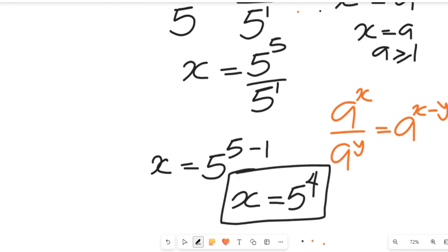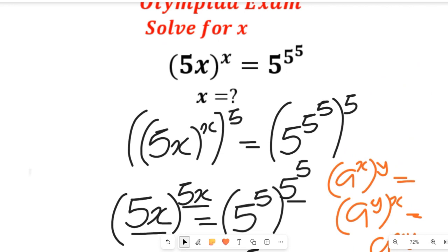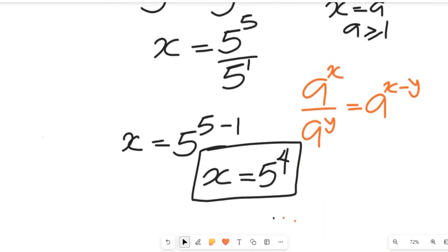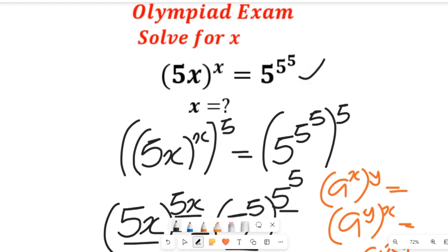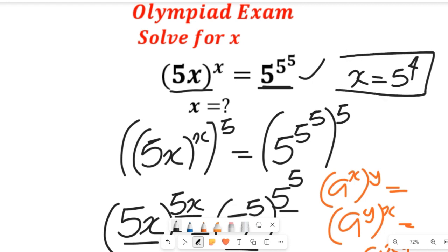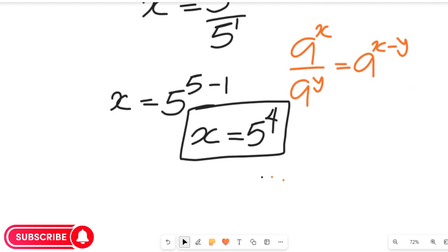The value of x equal to 5 to the power of 4 truly satisfies that exponential equation. I want to give you a task: take the value of x equal to 5 to the power of 4, insert it into the main expression to see if you actually get the value on the right hand side. If you do, then x equal to 5 to the power of 4 remains the answer. Please don't forget to like, share this video with your friends, and subscribe to our channel for more simplified math solutions. Thanks so much for watching, bye bye.